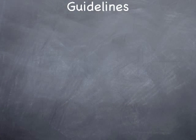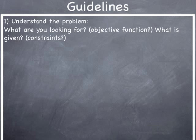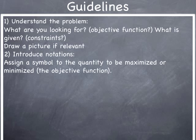So all this takes us to some general guidelines on how to deal with optimization problems. First, because these problems are given as word problems, you need to understand the problem — read it a couple of times. Ask yourself what you're looking for, in other words, what is the objective function — what is it that you want to maximize or minimize? What is given to you, in other words, what are the constraints? Draw a picture if relevant, and introduce notations: assign a symbol to the quantity to be maximized or minimized — in our previous case, the area.